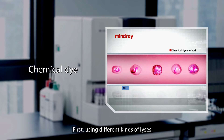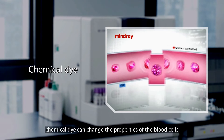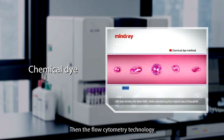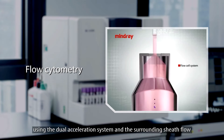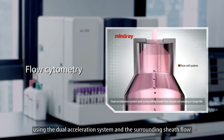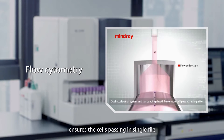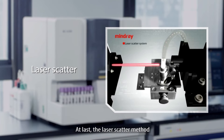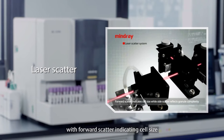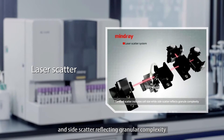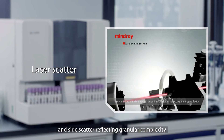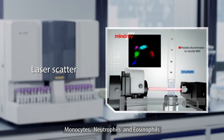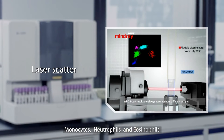First, using different kinds of lysis, chemical dye can change the properties of blood cells. Then, the flow cytometry technology, using the dual acceleration system and the surrounding sheath flow, ensures the cells passing in single file. At last, the laser scatter method, with forward scatter indicating cell size and side scatter reflecting granular complexity, can better differentiate lymphocytes, monocytes, neutrophils, and eosinophils.